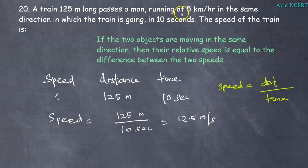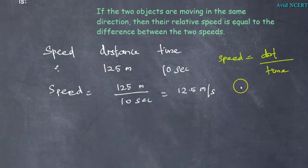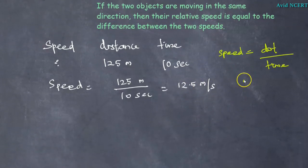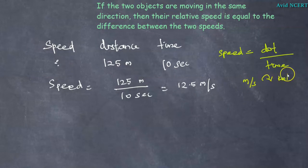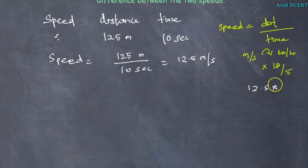The man is running at a speed of 5 kilometers per hour. Since that unit is in kilometers per hour, let's convert 12.5 meters per second into kilometers per hour. To convert meters per second to kilometers per hour, the value has to be multiplied by 18 by 5. Therefore, in this case it is 12.5 into 18 by 5.